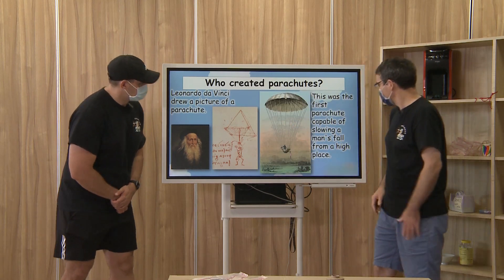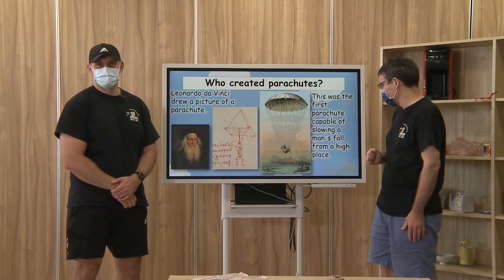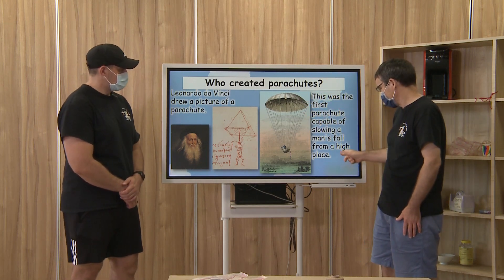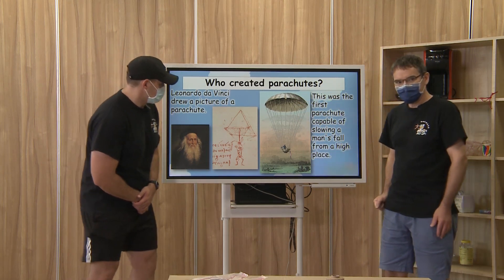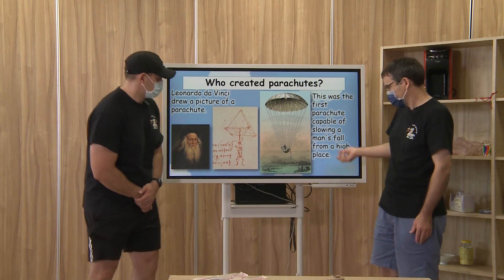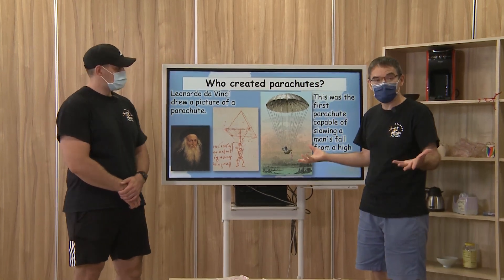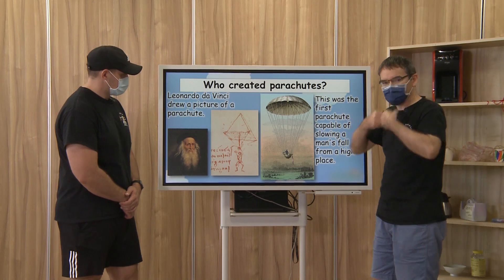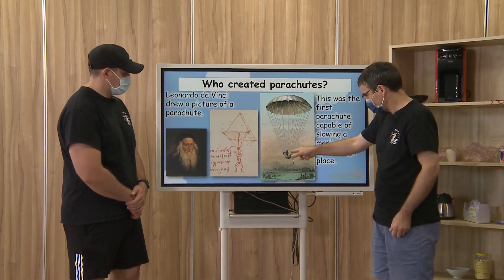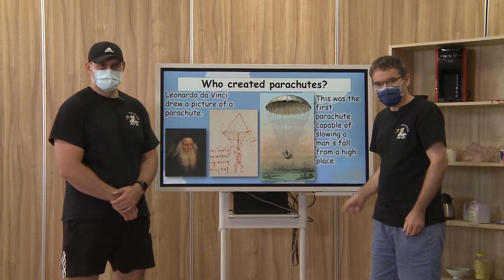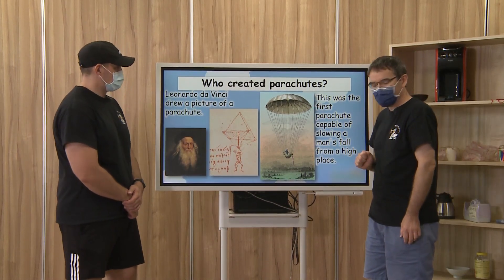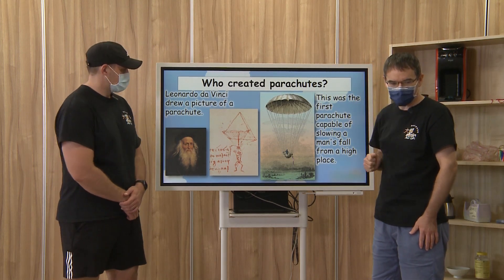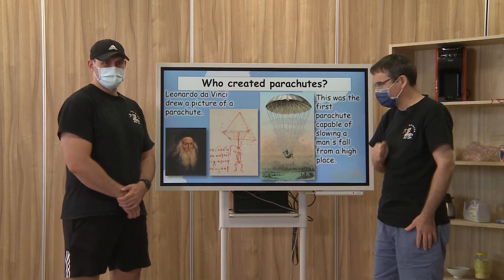And this is the picture — this was the first parachute that was capable of slowing down a man's fall from a high place. So it's a little different than the parachute you see today, where you're strapped in almost like a backpack. It's almost like a little basket there. But this was the first parachute — someone jumped from a high place and slowly went to the ground.